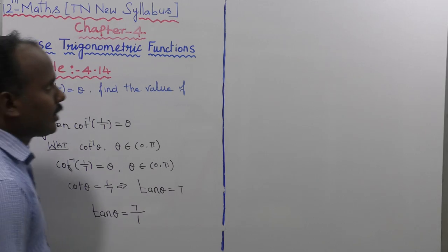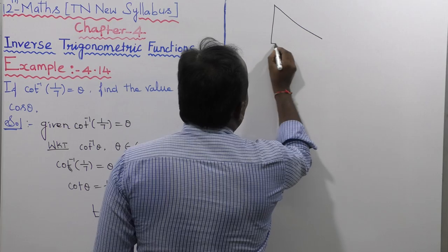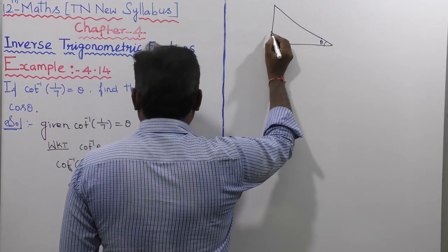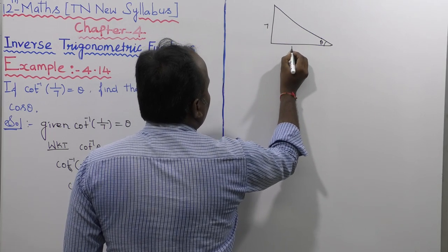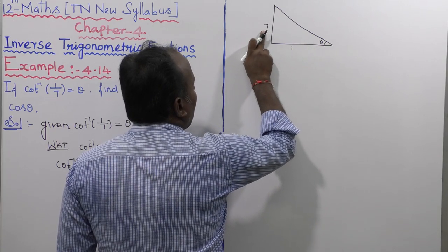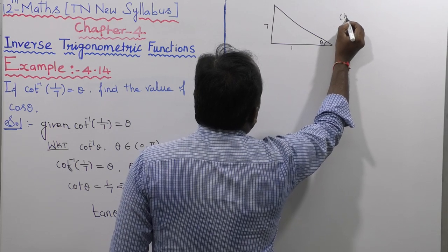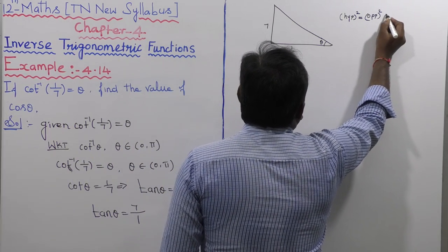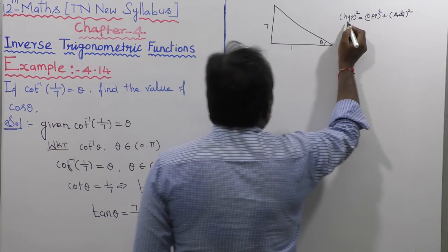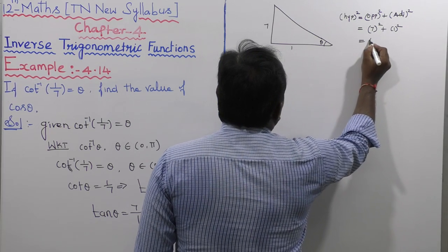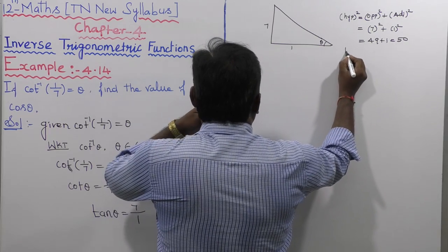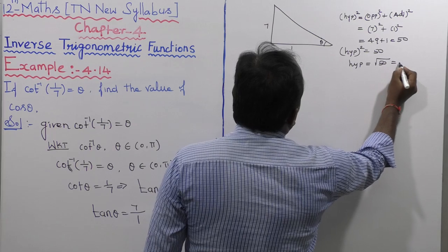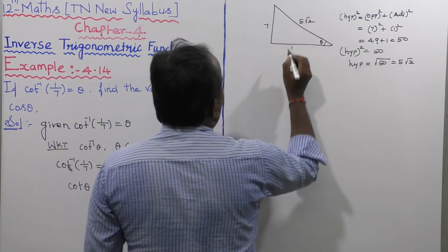Let us consider a right angle triangle where theta is the acute angle. The opposite side is 7 and the adjacent side is 1. By the Pythagorean theorem, hypotenuse squared equals opposite squared plus adjacent squared, which is 7 squared plus 1 squared equals 49 plus 1 equals 50. So the hypotenuse is equal to root 50, which is 5 root 2.